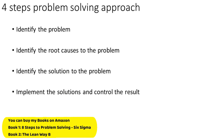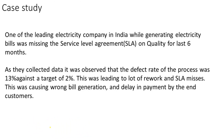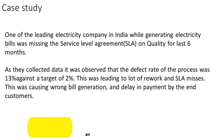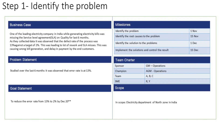Now we come to the four-step problem-solving approach. Step one: identify the problem. Step two: identify the root cause. Step three: identify the solution. Step four: implement the solution and control the results. We will learn this through a case study. There is a leading electricity company in India that was missing service level agreements on quality for the last six months — the defect rate of their bill generation process was 13 percent against a target of 2 percent, leading to rework, SLA misses, wrong bill generation, and delayed payments. A team was created and developed a project charter defining the business case, problem, goal, milestones, team charter, and scope — with a goal to reduce the error rate from 13 percent to 2 percent by December.